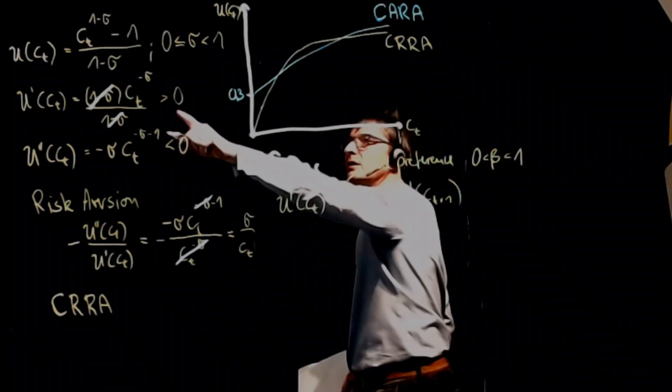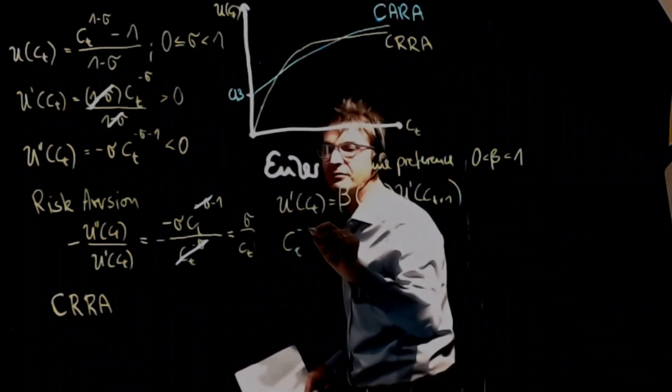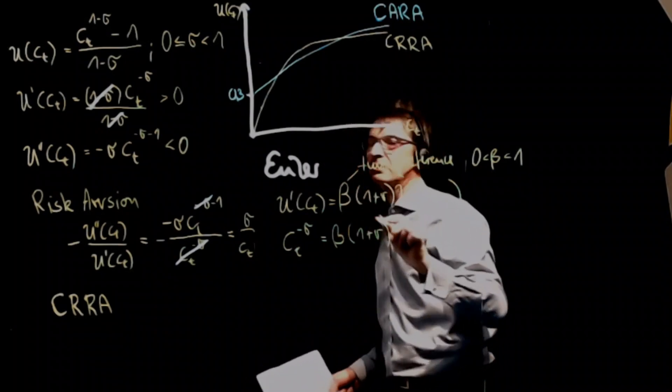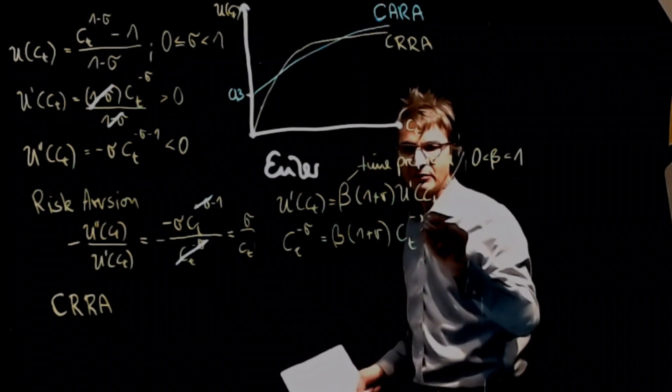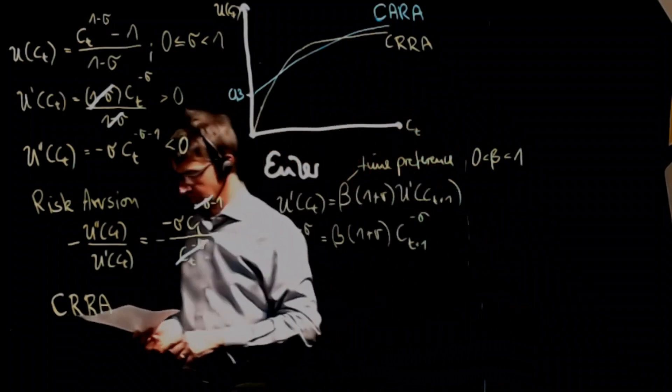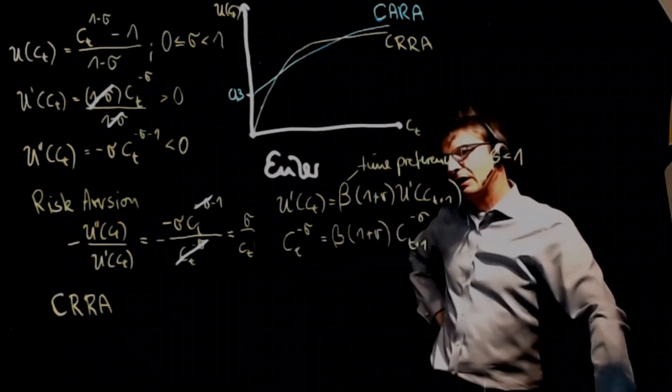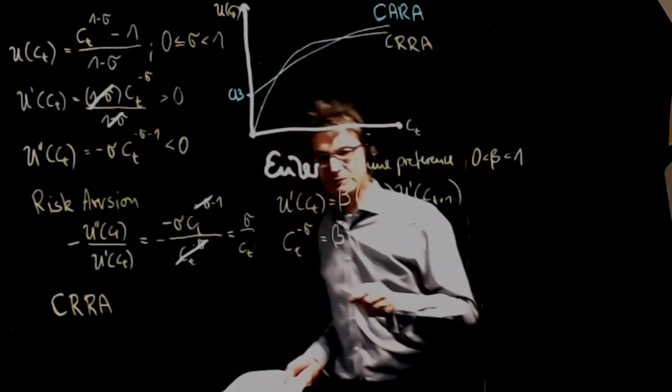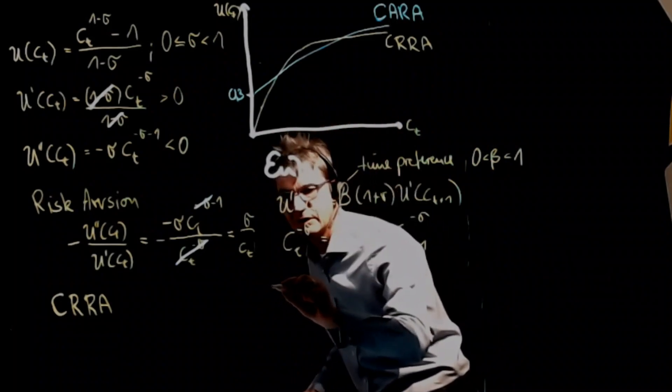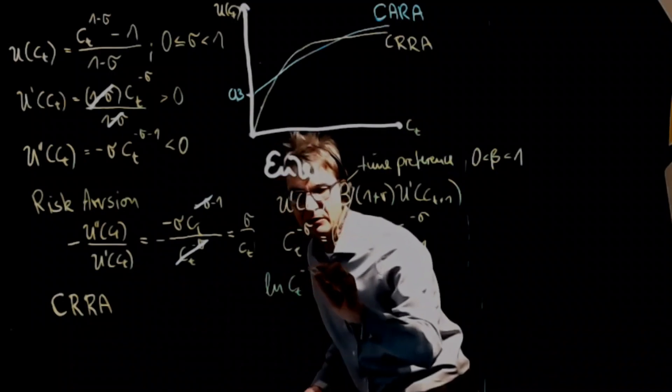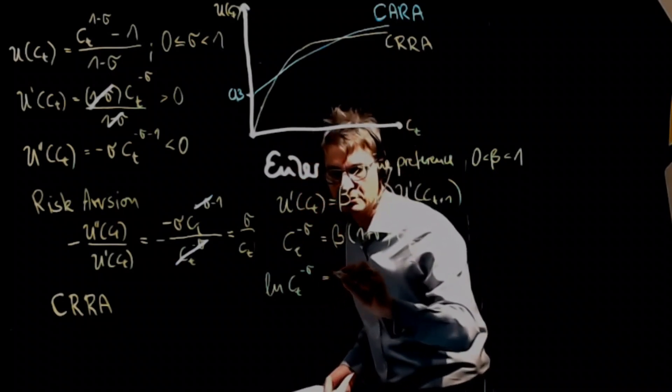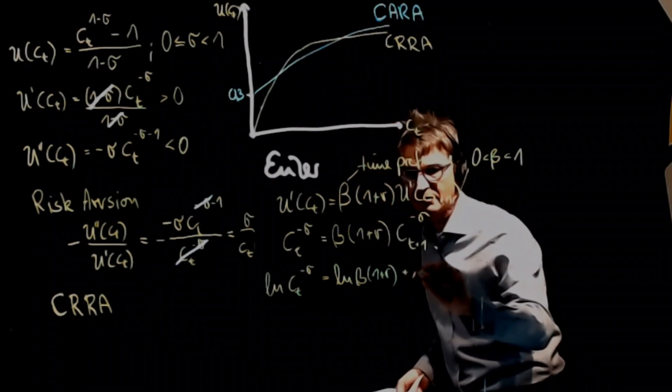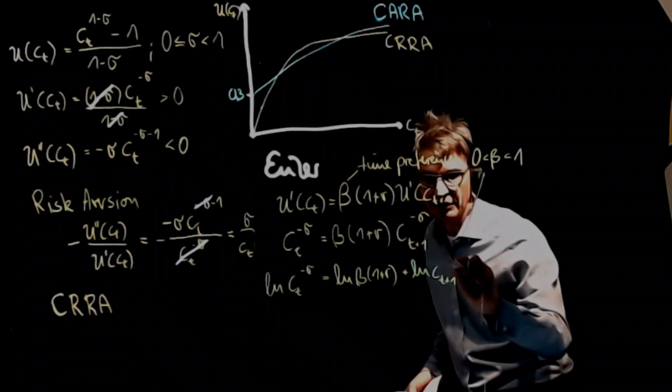The first derivative is CT to the power of minus sigma, which must be equal to beta times 1 plus R times CT plus 1 to the power of minus sigma. We can have this a little more comfortable. If we take logarithms of this, then we have the logarithm of CT to the power of minus sigma, which should be equal to the logarithm of beta times 1 plus R plus the logarithm of consumption T plus 1 to the power of minus sigma.